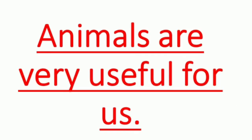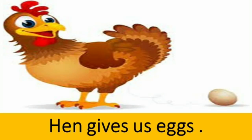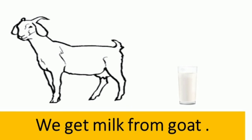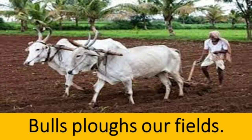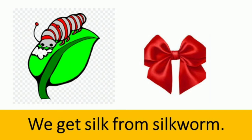Children, animals are very useful for us. Woh hamare bohat kaam aate hain. Cow gives us milk, and milk gives us energy. Hen gives us eggs. We get milk from goat as well. Bulls also help us, as bulls plough our fields. Sheep are also very useful — we get wool from sheep. Children, insects are also very useful, as the silk worm gives us silk.